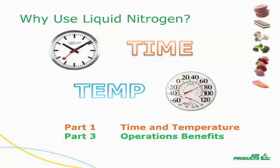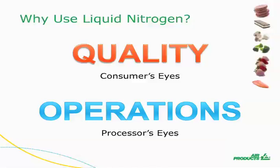Why would you use liquid nitrogen in order to create the cold environment in a cooler or freezer? While there are many combinations of time and temperature that will freeze or chill foods, only by using liquid nitrogen are you able to realize several specific benefits stemming directly from the very cold temperature. I like to categorize the benefits for using liquid nitrogen in food processing into two buckets: quality and operations. In this part, we'll outline the quality benefits. In Part 3, we'll review the operations benefits.